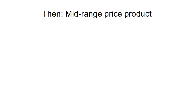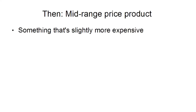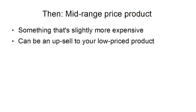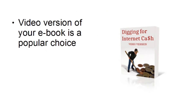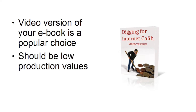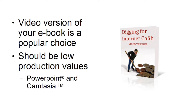Then you sell them your mid-range price product — slightly more expensive than your ebook. It can actually be an upsell to your low-priced product, offered immediately after someone buys, perhaps at a discount over what you'd sell it as a standalone. Because once someone has bought something and they're in buying mode, they're much more likely to make an additional purchase. A video version of your ebook is a popular choice at this level — low production values, just text and graphics with a voiceover — and it can be the exact same content as your ebook but turned into a video.